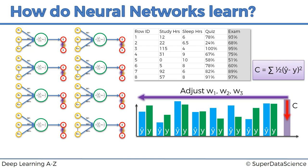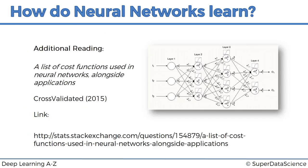This whole process is called backpropagation. Some additional reading you might want to do on cost functions — there are many different ones. A good article is located on Cross Validated, called 'A list of cost functions used in neural networks alongside applications.' You can Google that exact phrase and it will be the first result. It has good examples and use cases for different cost functions, so if you're interested to learn more, check out that article.